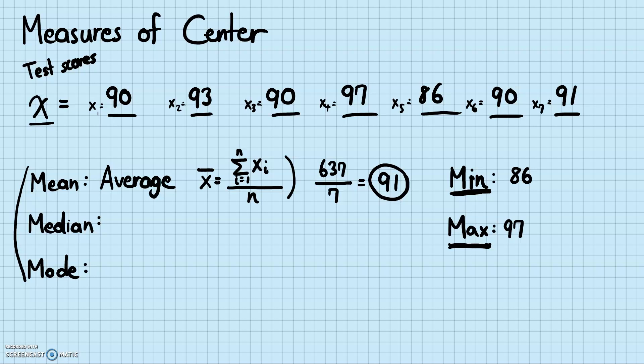For the median, you need to first rank your data. Ranking means putting your data in order from least to greatest — or from greatest to least, though it's usually written from least to greatest. So arranging our data from least to greatest: 86, 90, 90, 90, 91, 93, 97.